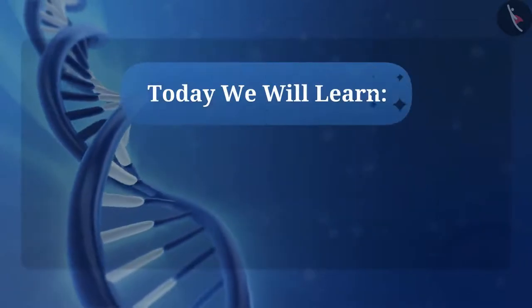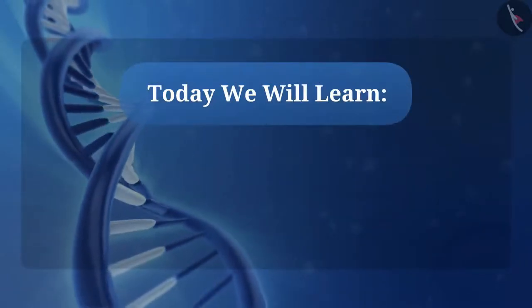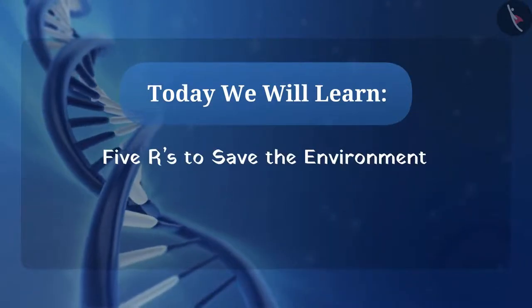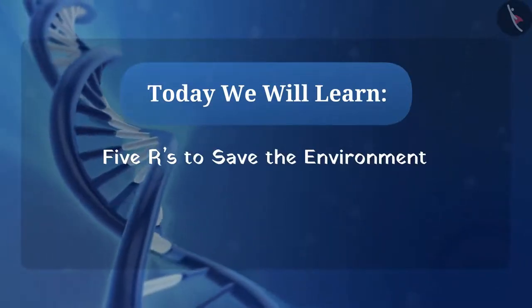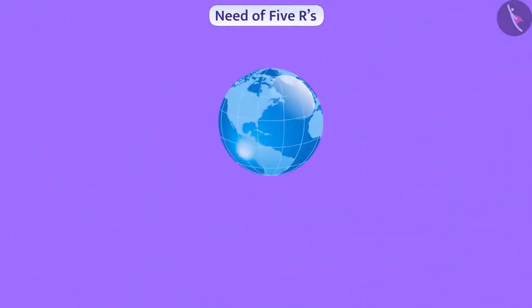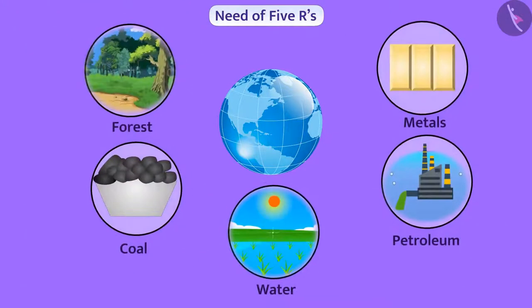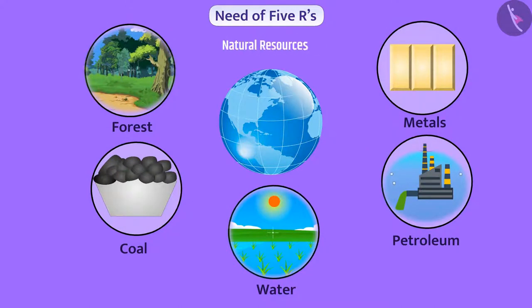Today we will learn 5 R's to save the environment. We obtain various things from the environment for our development. All the things we need from the environment are called natural resources.